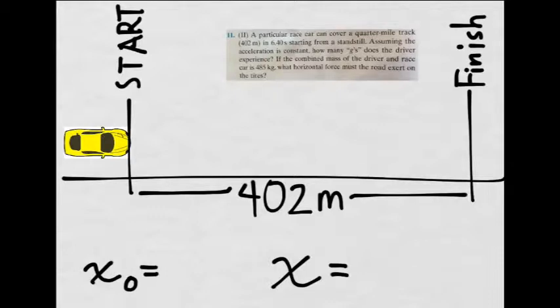The problem is a particular race car can cover a quarter mile track, which is 402 meters, in 6.40 seconds, starting from a standstill.